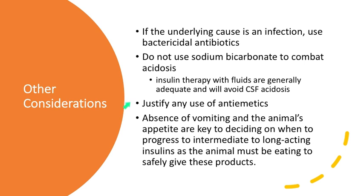Any time you have a diabetic animal and want to determine when they're ready for intermediate or long-acting insulin, be careful with use of antiemetics. Proper diabetic treatment is going to make the animal feel better and is the true antiemetic in this situation. Sometimes vomiting is severe and you need to get food into the animal and can't provide parenteral nutrition for all its calories — then you may need an antiemetic. The absence of vomiting and the animal's appetite are key to determining whether you can progress to an intermediate or long-acting insulin.